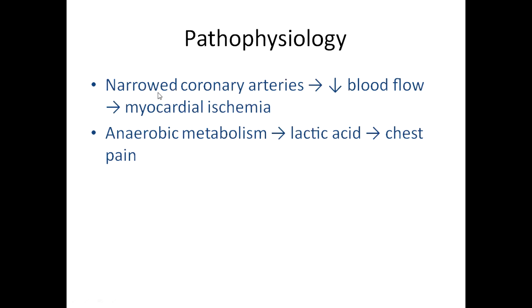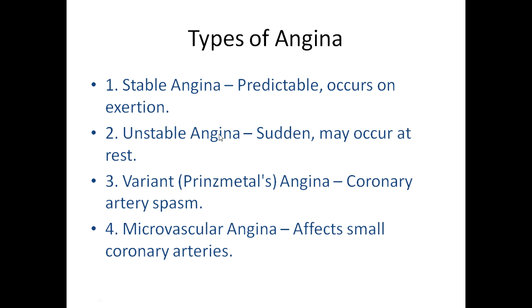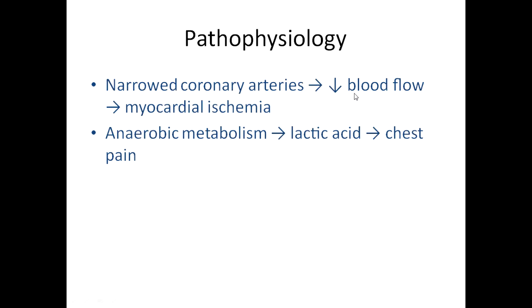The simple pathophysiology is: narrowed coronary arteries lead to decreased blood flow, which leads to decreased or no oxygen supply to the heart muscle, leading to necrosis — called myocardial ischemia. Any of the four types (stable, unstable, variant, microvascular) can cause this sequence. Additionally, when oxygen is not properly available, anaerobic metabolism occurs, lactic acid and lactic acidosis form, which also leads to chest pain.